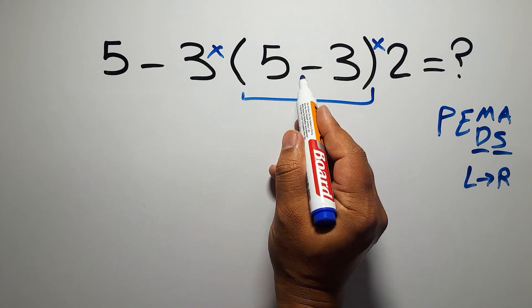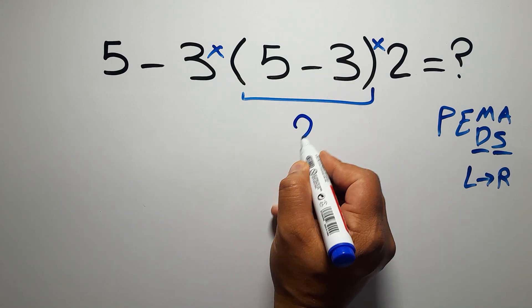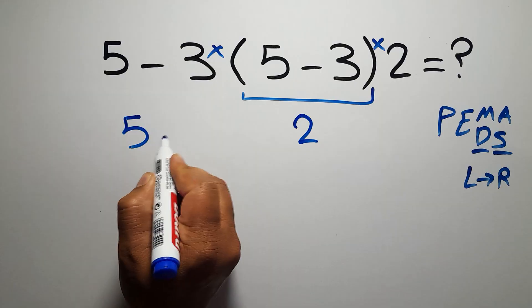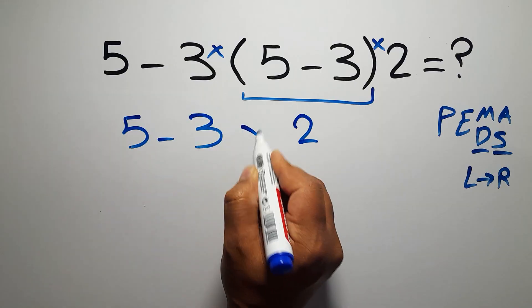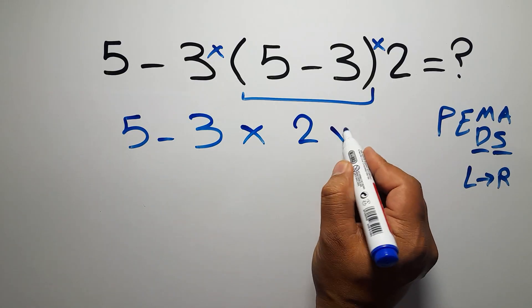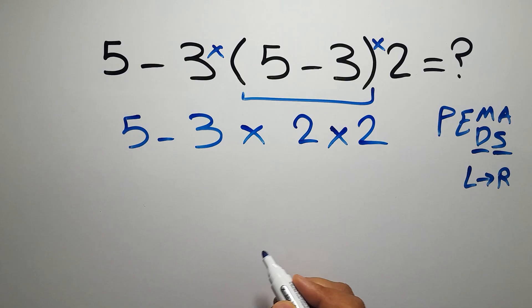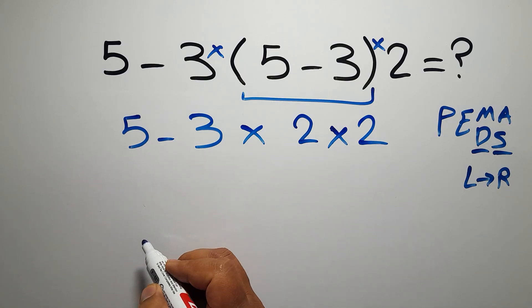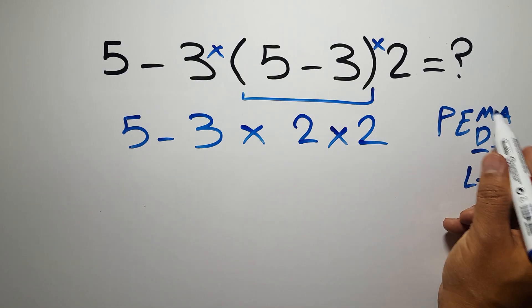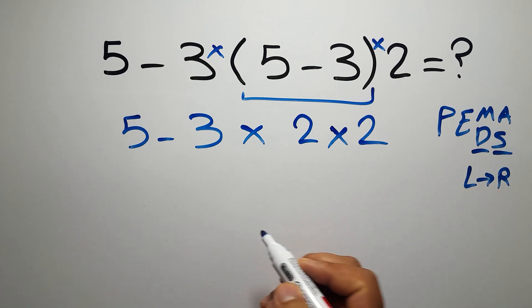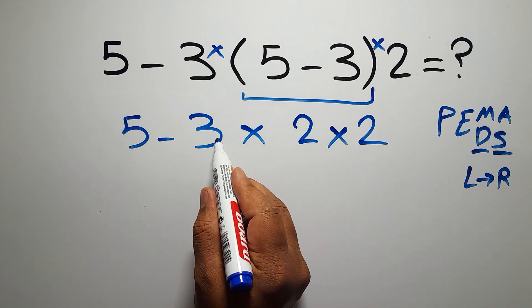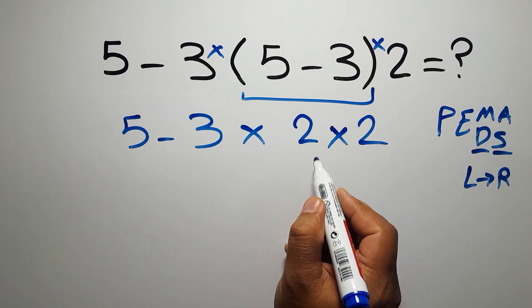Inside these parentheses we have 5 minus 3 which equals 2, so 5 minus 3 times 2 and again times 2. Now we have two multiplications and one subtraction. In PEMDAS, multiplication comes before subtraction, so first this 3 times 2 which gives us 6.